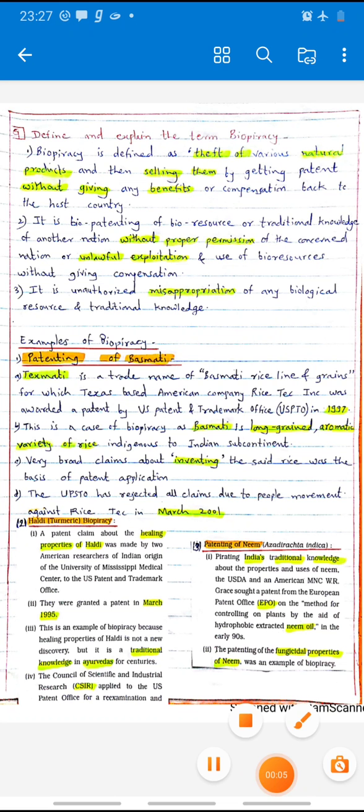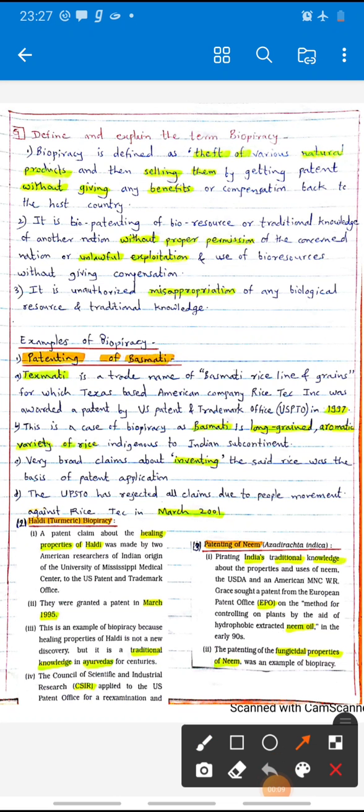Hello students, now we study about biopiracy and examples of biopiracy. The definition of biopiracy: biopiracy is defined as the theft of various natural products and then selling them by getting patents without giving any benefits or compensation back to the host country. It is biopatenting of bioresources or traditional knowledge of another nation without proper permission of the concerned nation, or unlawful exploitation and use of bioresources without giving compensation. It is unauthorized patenting of any biological resource and traditional knowledge.